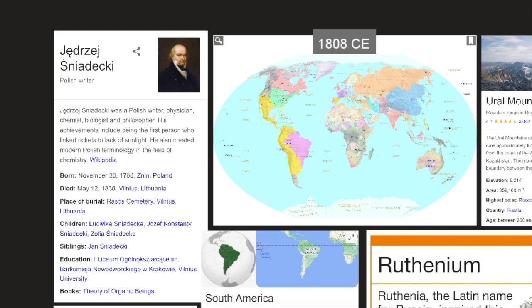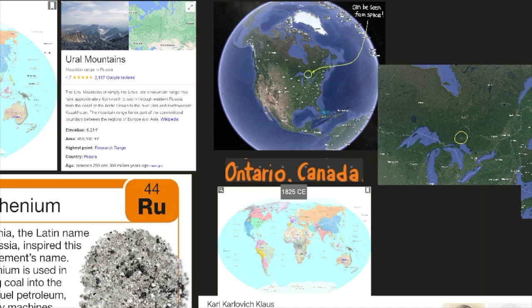The Polish chemist, Jędrzej Śniadecki, was investigating platinum ores from South America and, in May of 1808, when he discovered a new metal, which he called it vestium. However, when French chemists tried to repeat his work, they were unable to find it in the platinum ore they had. When Śniadecki learned of this, he believed he had been mistaken and withdrew his claim.